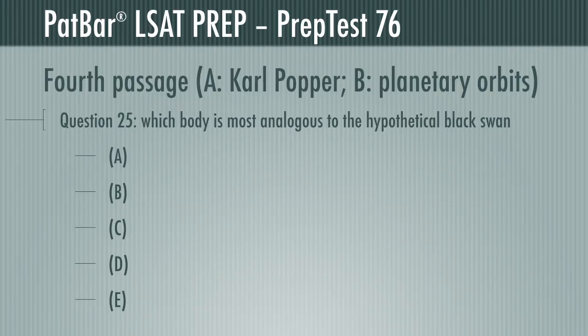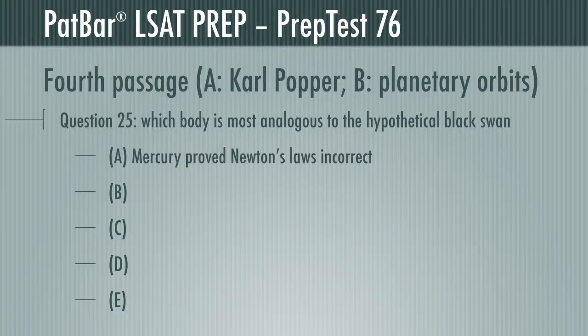Question 25 points you to the rejection of Newton's laws in Passage B and wants you to determine which celestial body draws the closest analogy to the hypothetical black swan mentioned in Passage A. The black swan would have served as evidence proving a hypothesis false, so you're looking for the body that proved a theory to be false. There's only one. Mercury's orbit failed predictions, and Newton's laws failed to find another planet. Only when Einstein's general theory was applied did the orbit match predictions. A is the correct response.